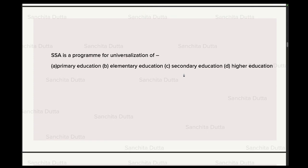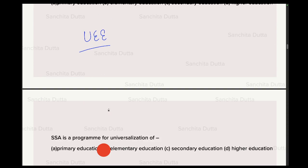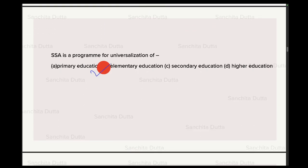Next question: SSA is a program for universalization of which of the following? SSA — Sarva Shiksha Abhiyan — came around 2001 under the government of Atal Bihari Vajpayee. SSA talks about UEE — Universalization of Elementary Education. Elementary Education covers Classes 1 to 8, for children aged 6 to 14 years.